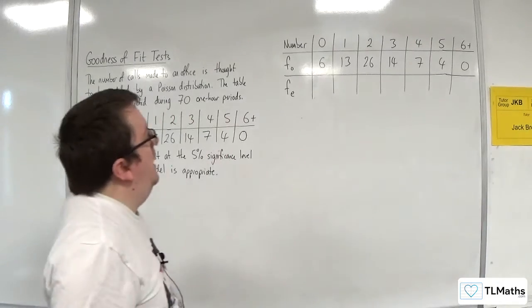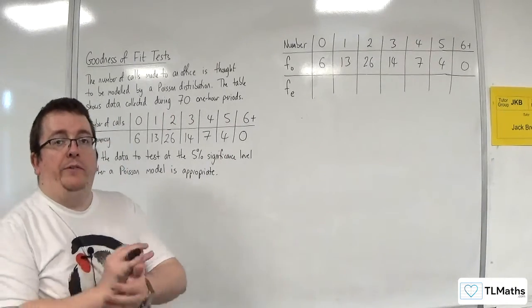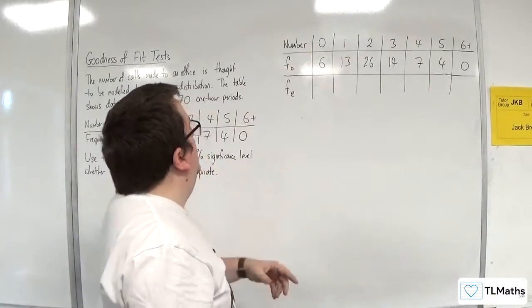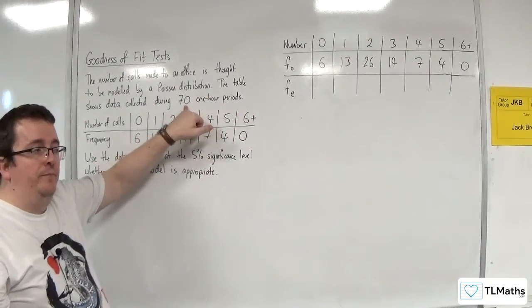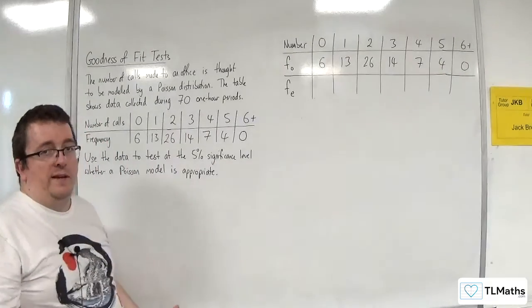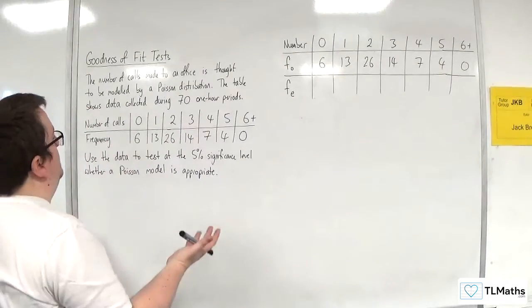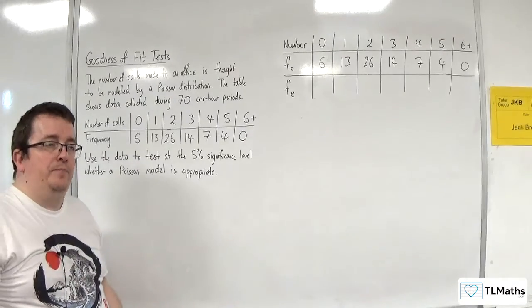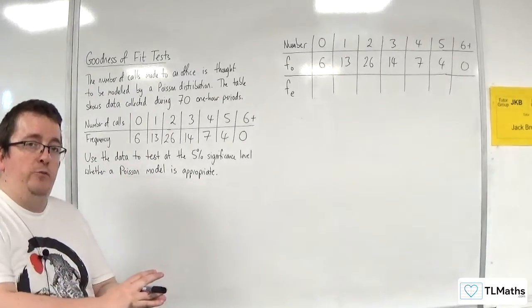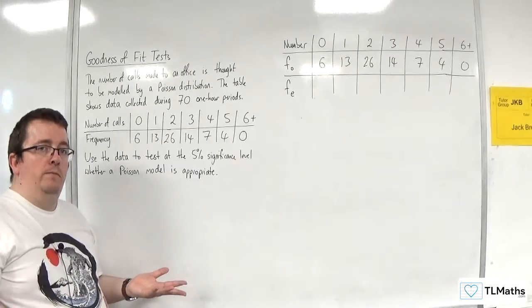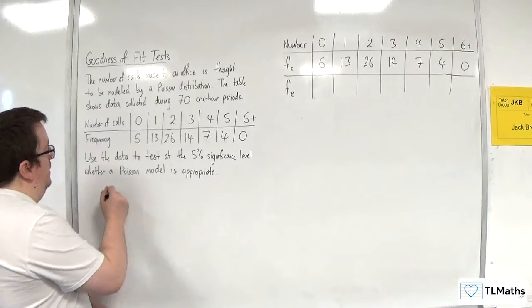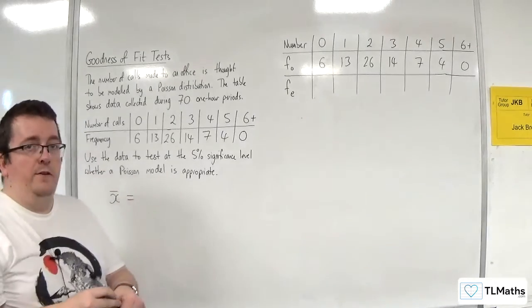Now, to work out the expected frequencies, I'm going to need to work out the probability of X being equal to 0 and then multiply it by 70. However, I can't work out those probabilities if I don't have a lambda. There's no lambda given in the question, so I need to estimate lambda. Lambda is the expected value of the distribution, which is the mean of the distribution. So it makes sense to estimate lambda by finding the mean of my data.